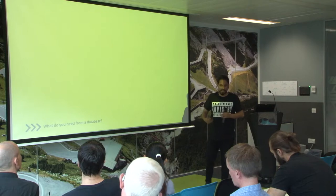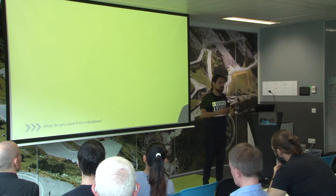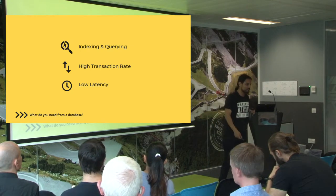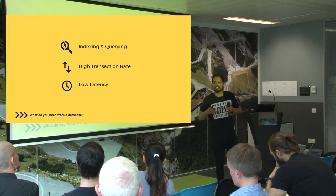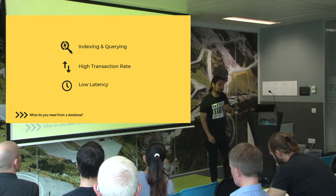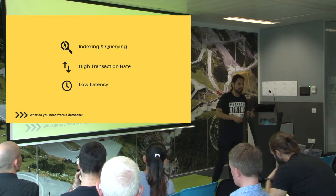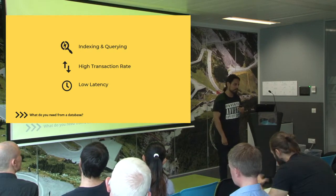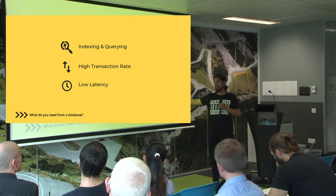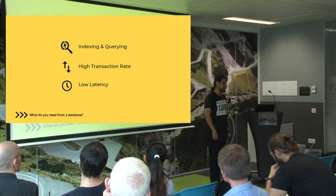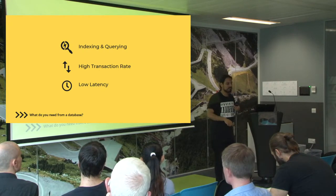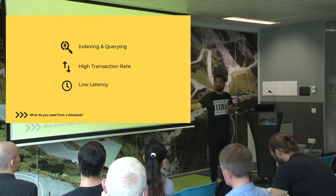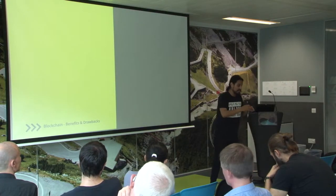Going back to fundamentals — what do you actually need from a database? Indexing and querying: imagine if Google existed and you couldn't search it. It needs to be fast — if your Google result took 10 seconds compared to Bing at two seconds, which would you opt for? High transaction rates is another big thing. Low latency: you go on Facebook, change your user profile, click save — imagine it takes 30 seconds to see the changes. That can't be happening. These are the things a database really needs.